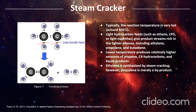Figure 7 shows the cracking process. In the steam cracker process, the reaction temperature is very hot. Light hydrocarbon feeds such as ethane, LPG, or light naphthas give product streams rich in lighter alkenes including ethylene, propylene, and butadiene. Lower temperatures produce relatively higher amounts of propylene, C4 hydrocarbons, and liquid products. Ethylene is synthesized by steam cracking; however, propylene is merely a by-product.